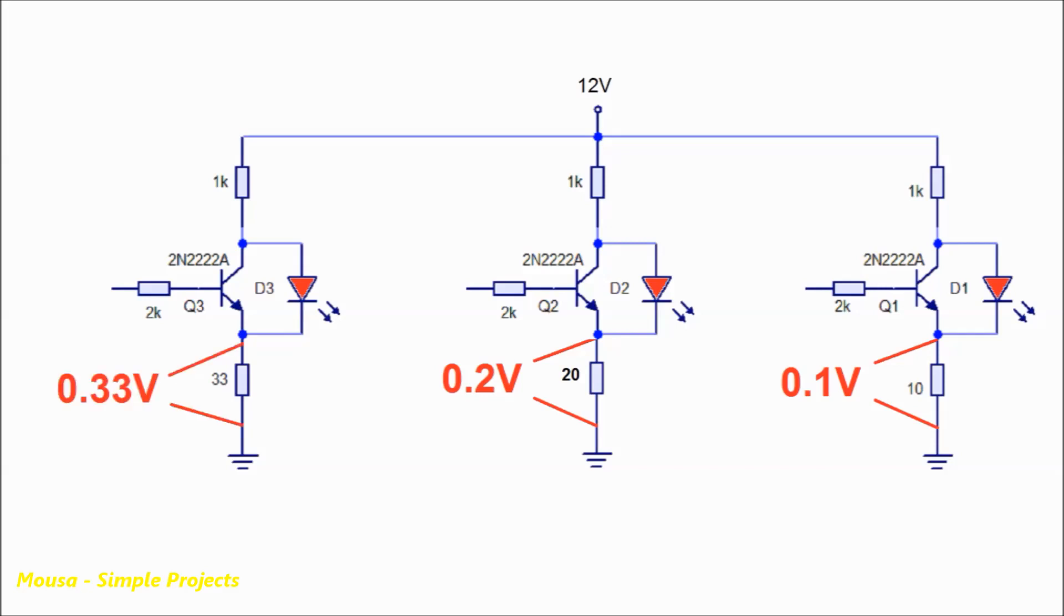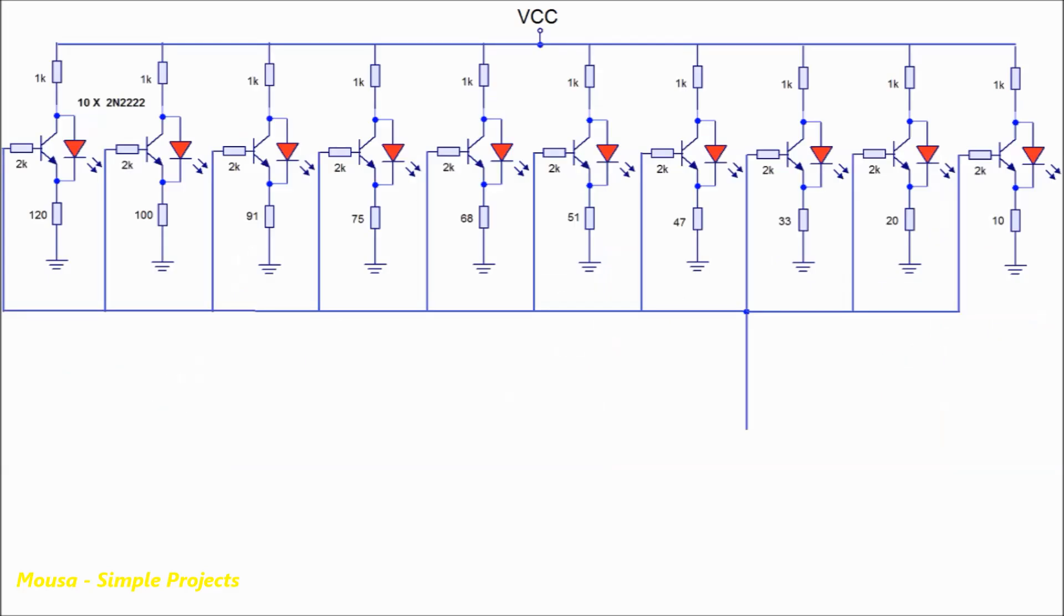And so on. So the base of the first channel needs 0.8 volts to turn off the LED. The second channel needs 0.9 volts. The third channel needs 1.03 volts, and so on. Then I hooked up the base of all transistors together.